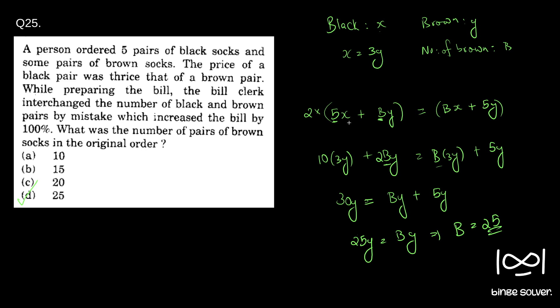That is, the original amount is doubled. So 5x plus By, where x is the price of black socks and y is the price of brown socks, and 5 is the total number of black socks, and B capital B is the total number of brown socks. So that 5 and B got interchanged. So 2 into 5x plus By equal to Bx plus 5y. That is the given information.